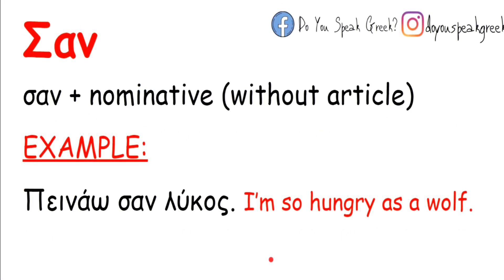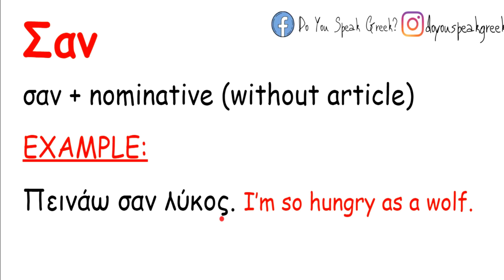Sometimes σαν can be used with the nominative. This happens only in simple sentences and without the article. For example, πινάω σαν λύκος. The noun λύκος here is in the nominative.